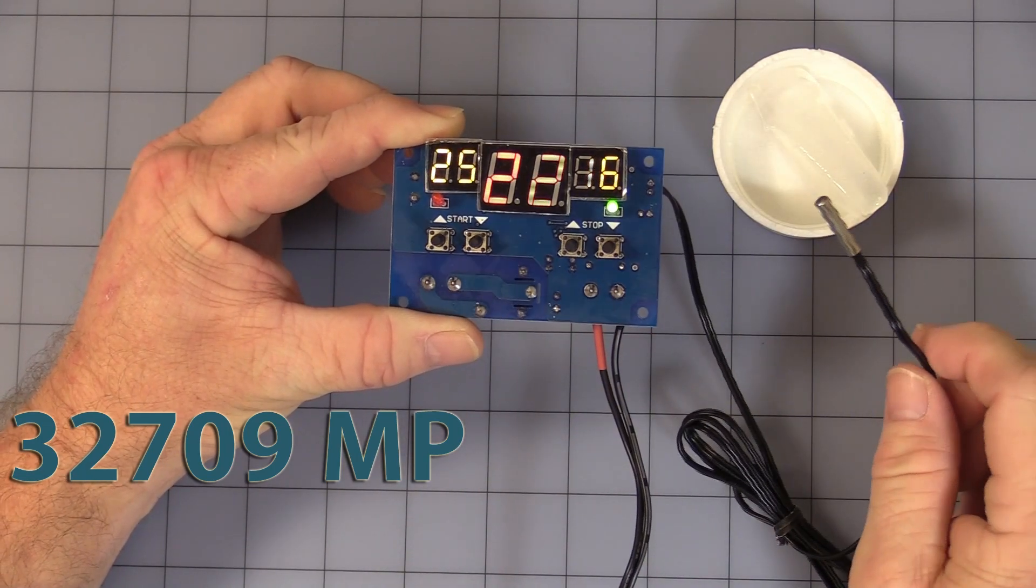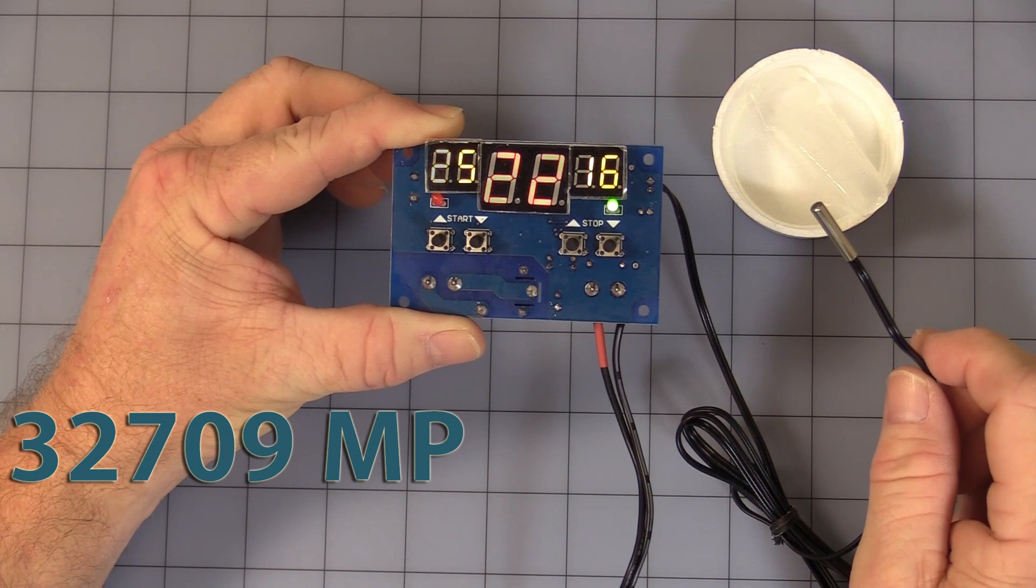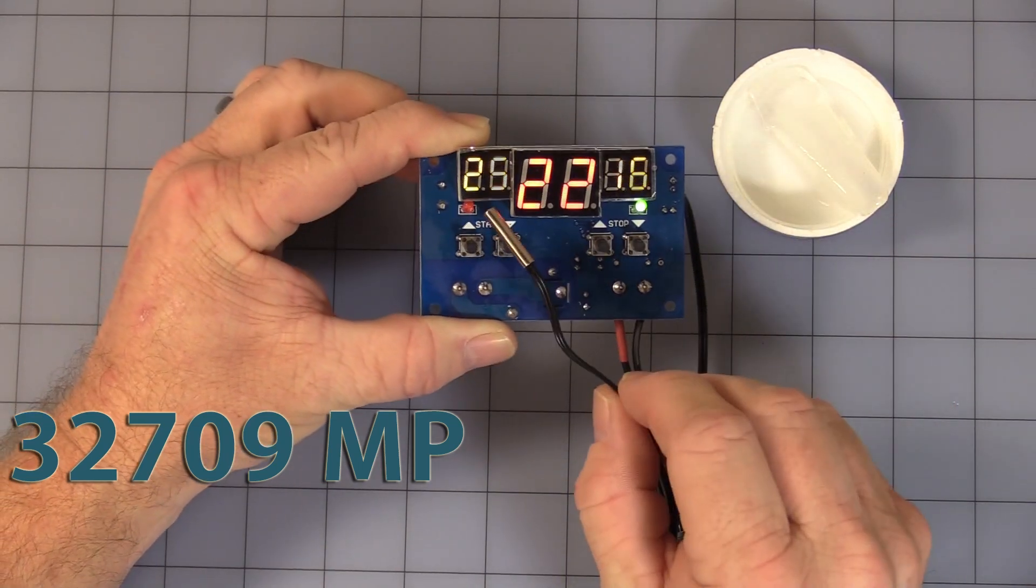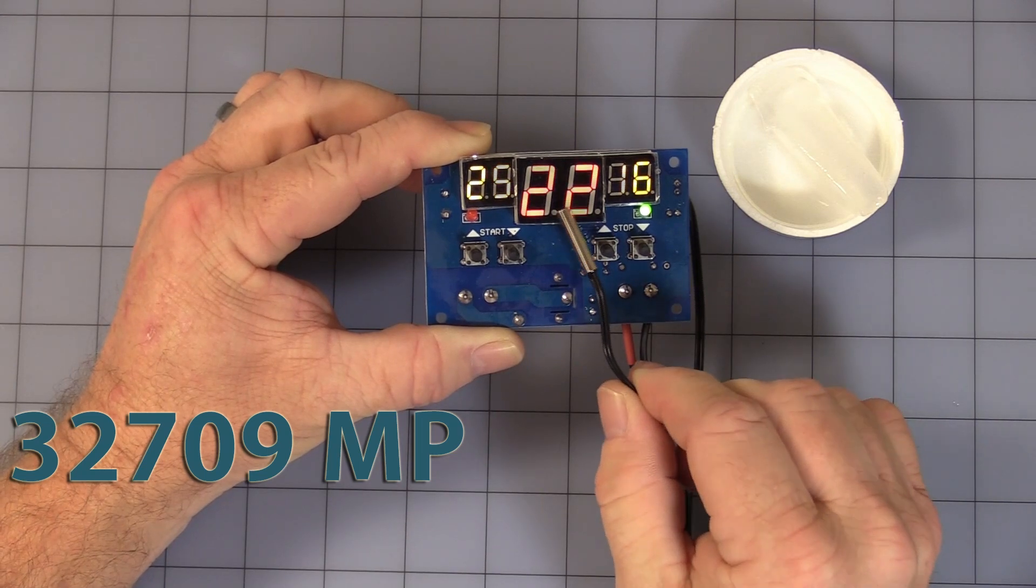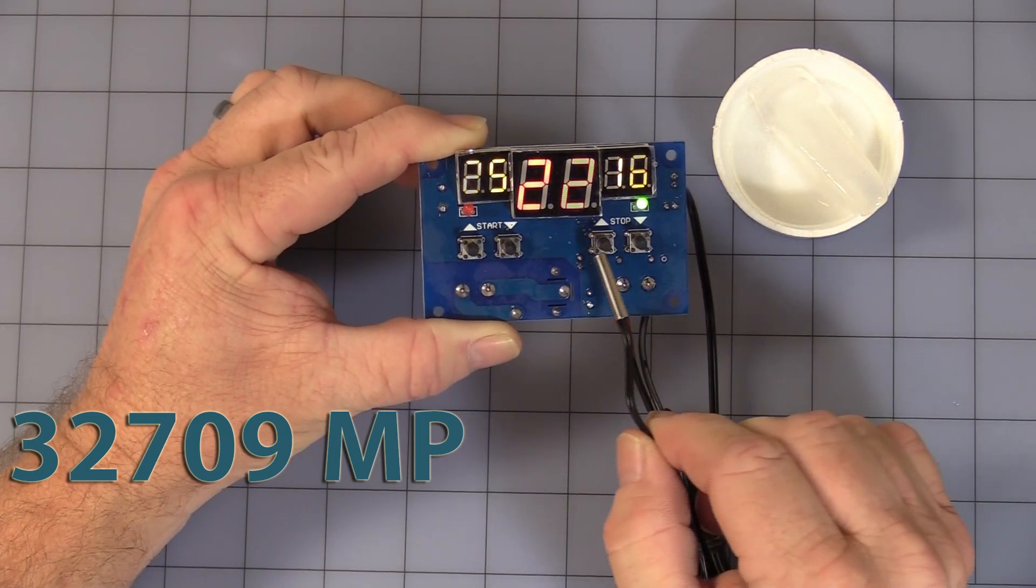The three displays: the one on the far left is your relay start button. That's the temperature at which your relay will turn on. Then you have ambient air temperature and your relay off setting.